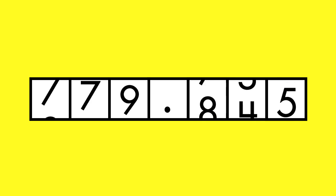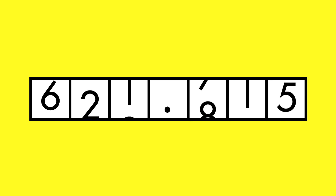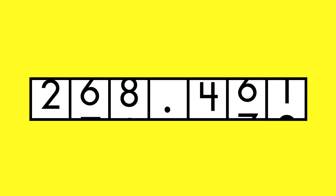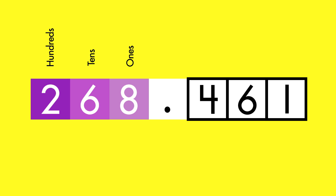You know that decimals name parts of numbers that are less than one. Just like whole numbers, decimals have place value. The place value of whole numbers increases as you move away from the decimal point, from right to left. The place value of decimals decreases as you move away from the decimal point, from left to right.